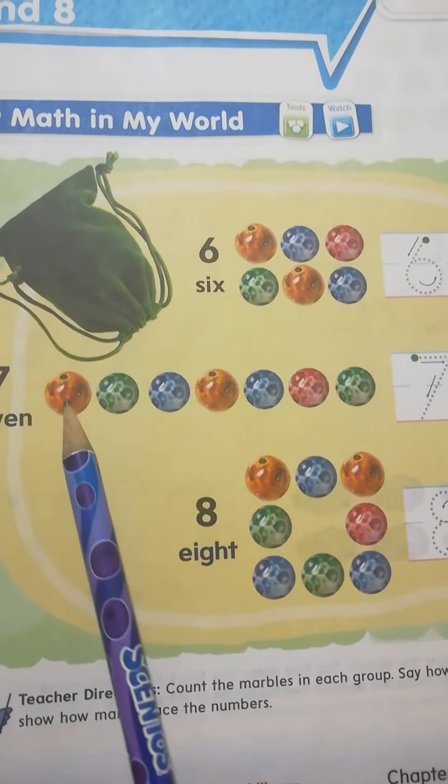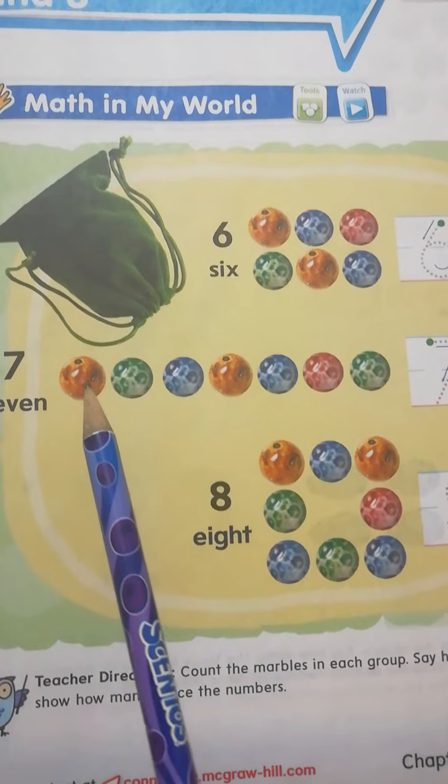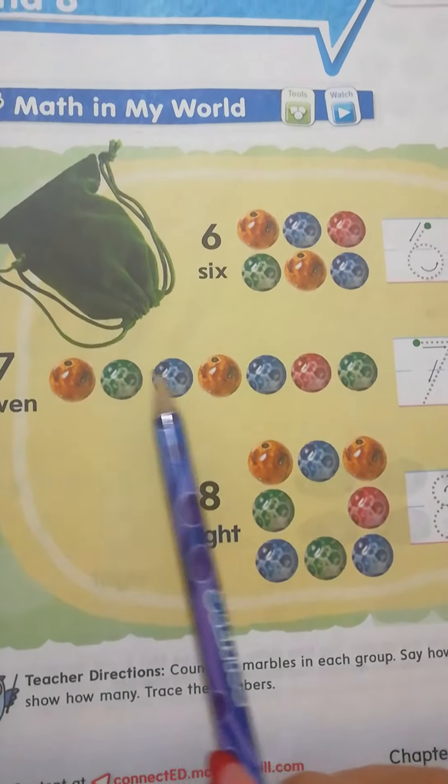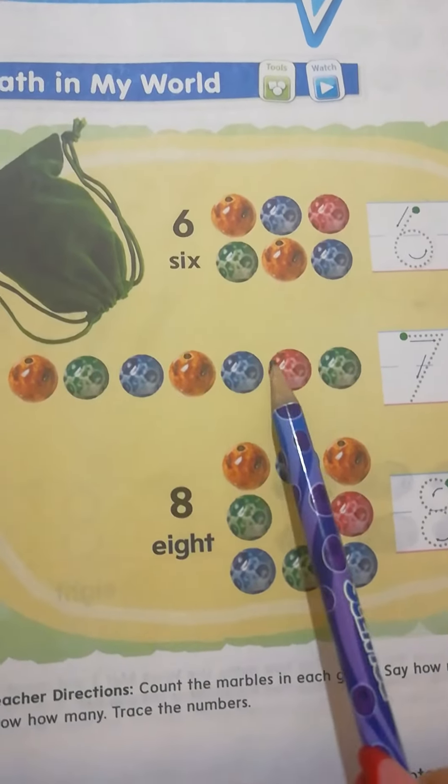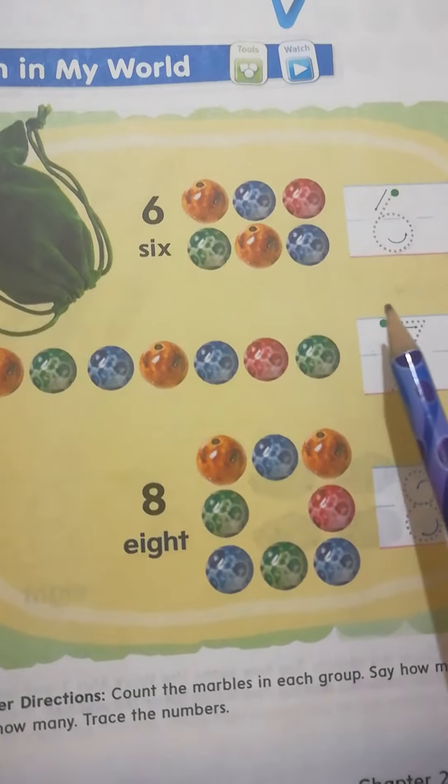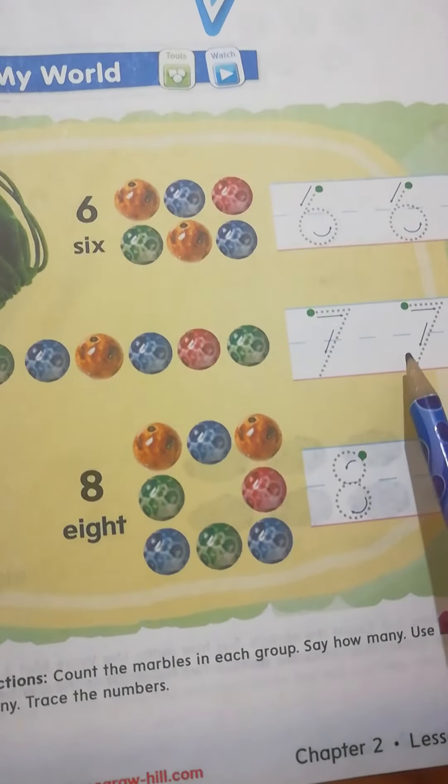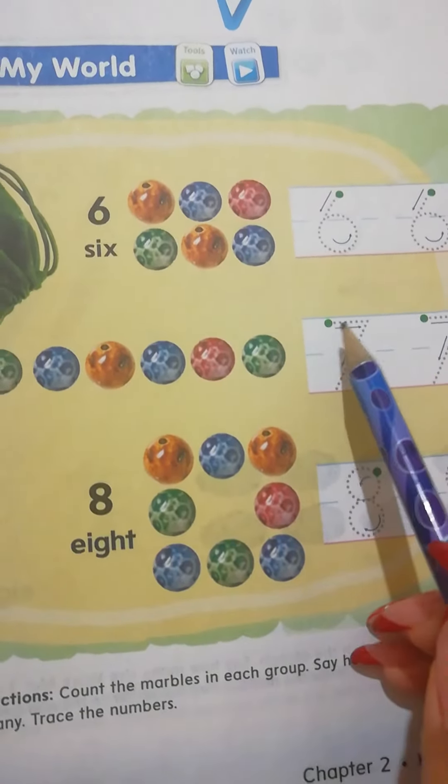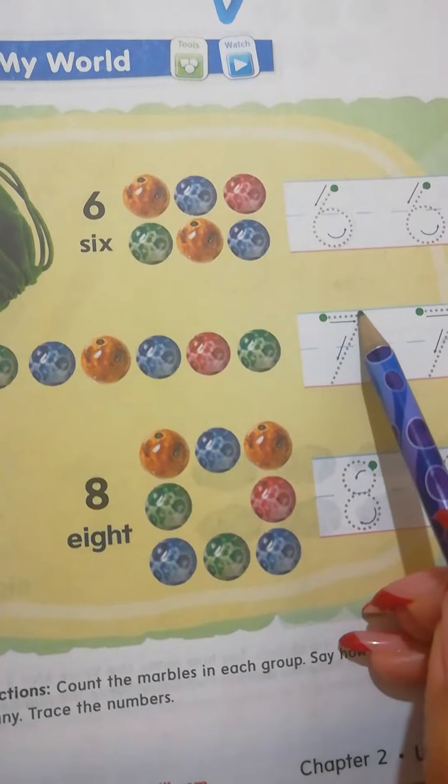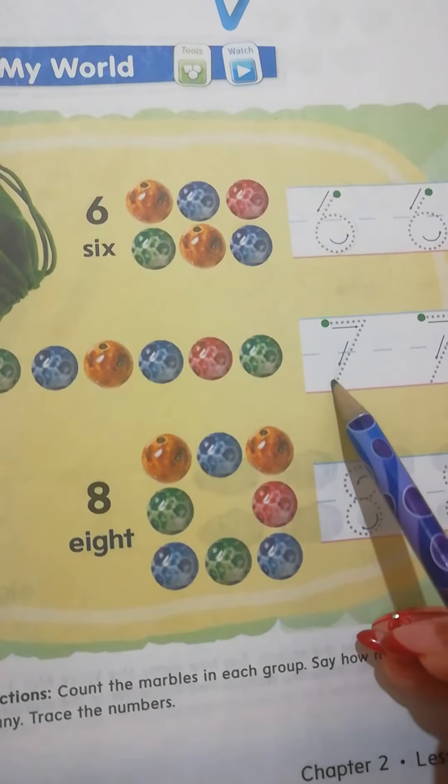And here we count the balls again in the second group. We have 1, 2, 3, 4, 5, 6, 7. So we trace number 7 twice. Number 7 is a horizontal line, then a diagonal line.